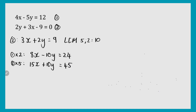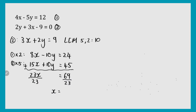Now, as in the previous examples we subtracted the equations, but in this case we can add the two equations because we have a negative 10y and a positive 10y. When you add them together you get 0, so that's how we eliminate the y. Adding the equations: 15x plus 8x is 23x, the y's cancel out, and 24 plus 45 is 69. So 23x equals 69. Dividing by 23, x equals 3.